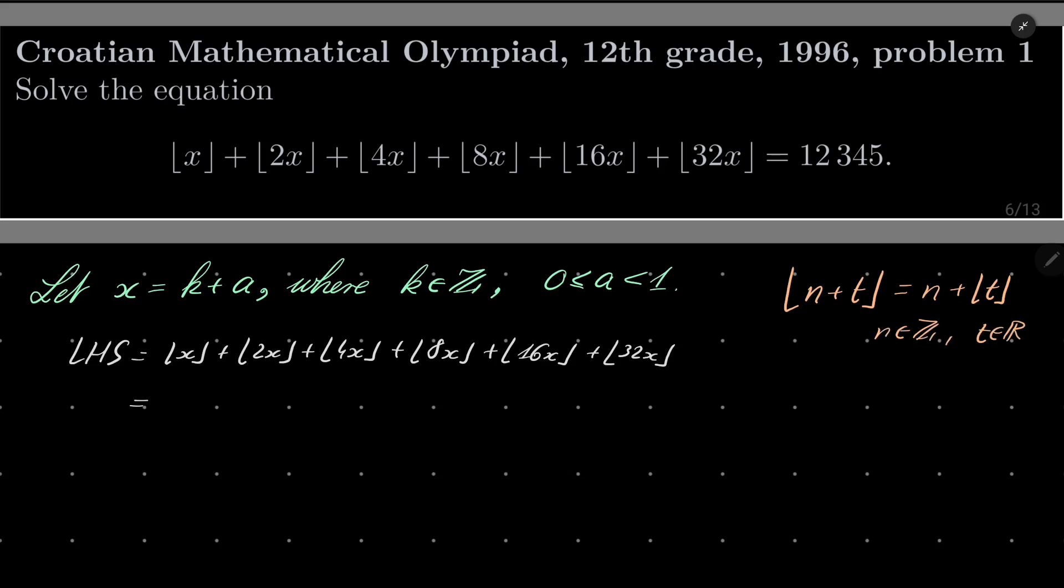Let's take a look. Floor of x is k plus floor of a, so it's k plus floor of a, then we have 2k plus floor of 2a.